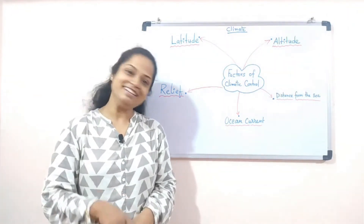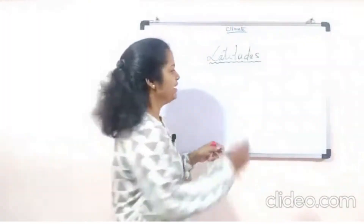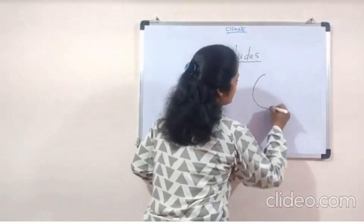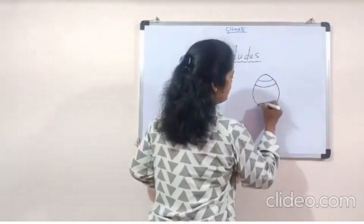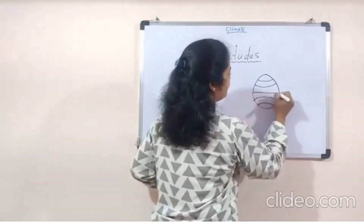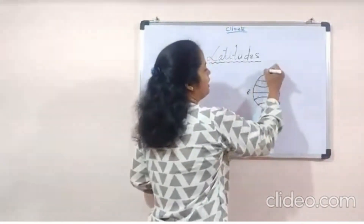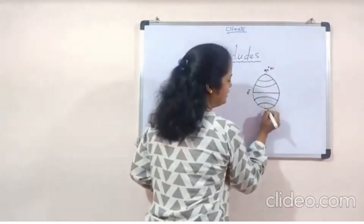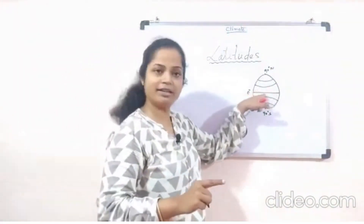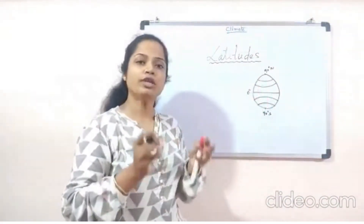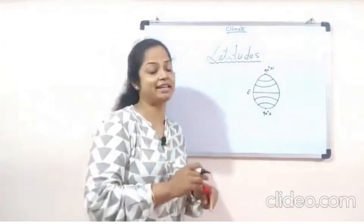Let's get going — let's start with latitudes. To understand latitude, we should draw all these imaginary lines: 0 degree, 90 degree north, and 90 degree south. This is the equatorial zone. The equatorial zone has the highest temperature.